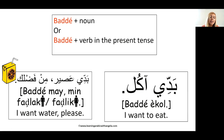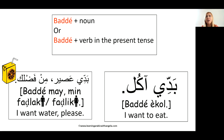Here it's with a noun. We can say 'min fadlak' for a male, 'min fadlik' for a female, 'iza bitreed,' 'iza bitreedi,' 'law samaht,' 'law samahti,' and so on. Unlike in English where you wouldn't normally say 'I want something' — that would be considered rude — in Lebanese it's perfectly fine. We don't really say 'I'd like to have something'; it's straightforward, you say 'I want,' and obviously add a 'please.'